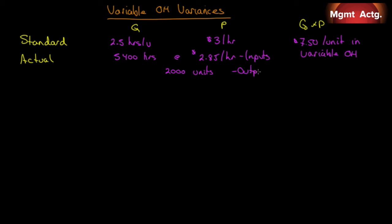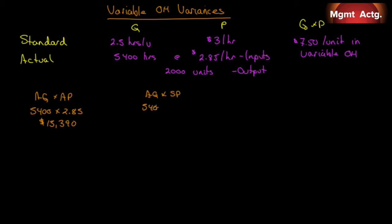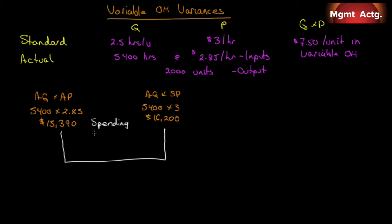First column, AQ times AP: 5,400 times $2.85 equals $15,390. We compare that with actual quantity times standard price: 5,400 times $3.00 equals $16,200. So $15,390 minus $16,200 is negative $810 — that's $810 favorable. This is called a spending variance — an overhead spending variance of $810 favorable.